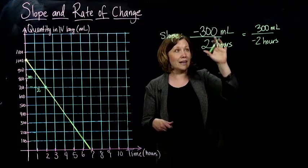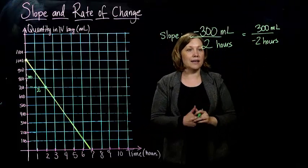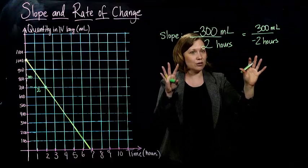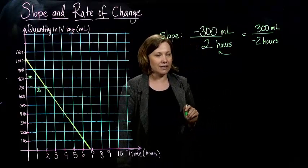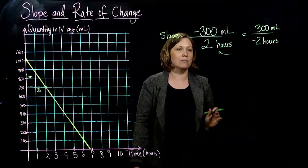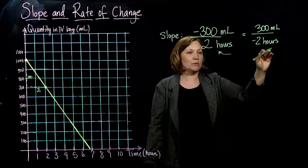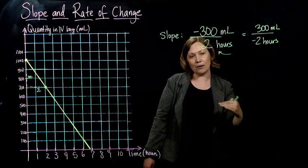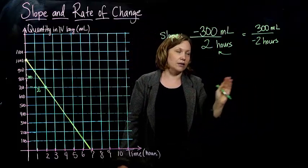Both answers will be negative. A negative divided by a positive is negative. A positive divided by a negative is negative. So both answers represent the same thing. This one makes a little bit more sense to us because we only go forward in time. So we wouldn't want to write a slope of 300 milliliters for going back in time 2 hours. We're saying it's going down 300 milliliters for every 2 hours.